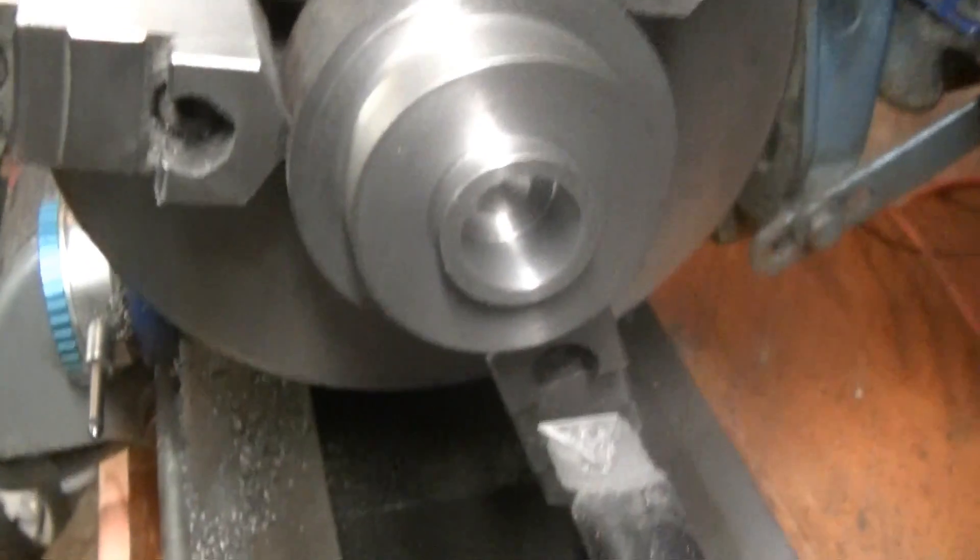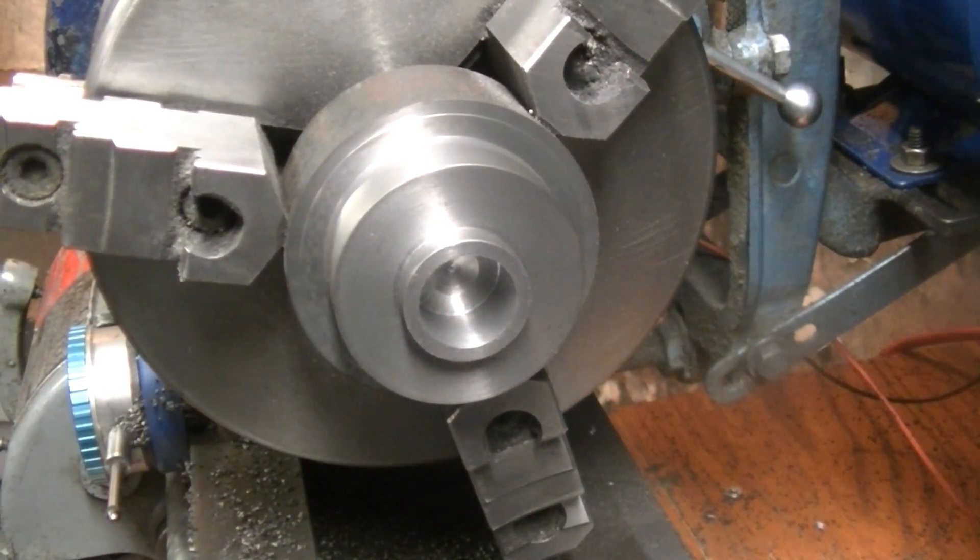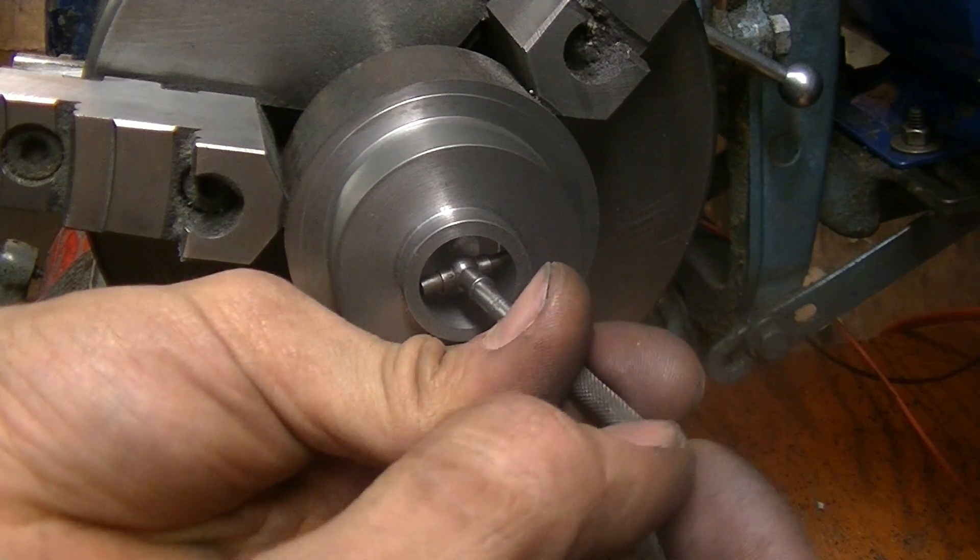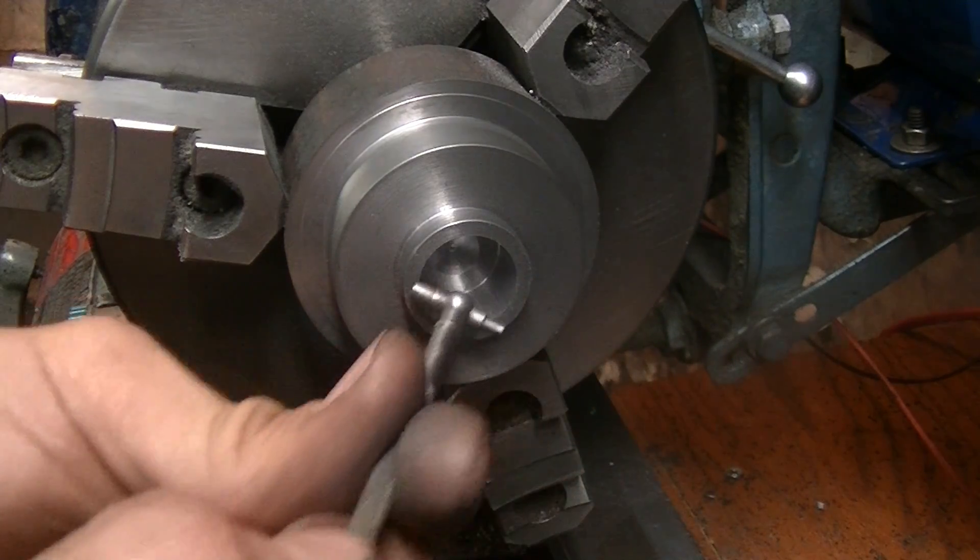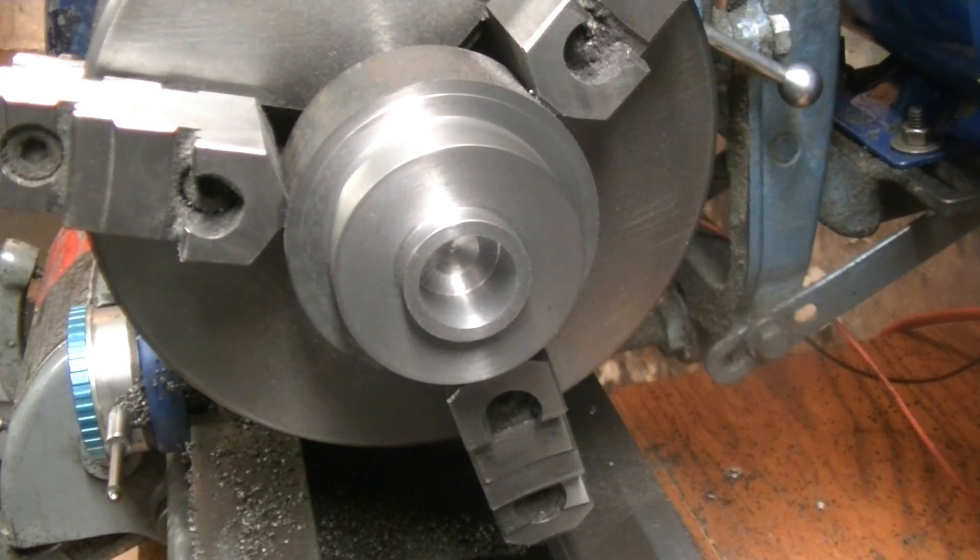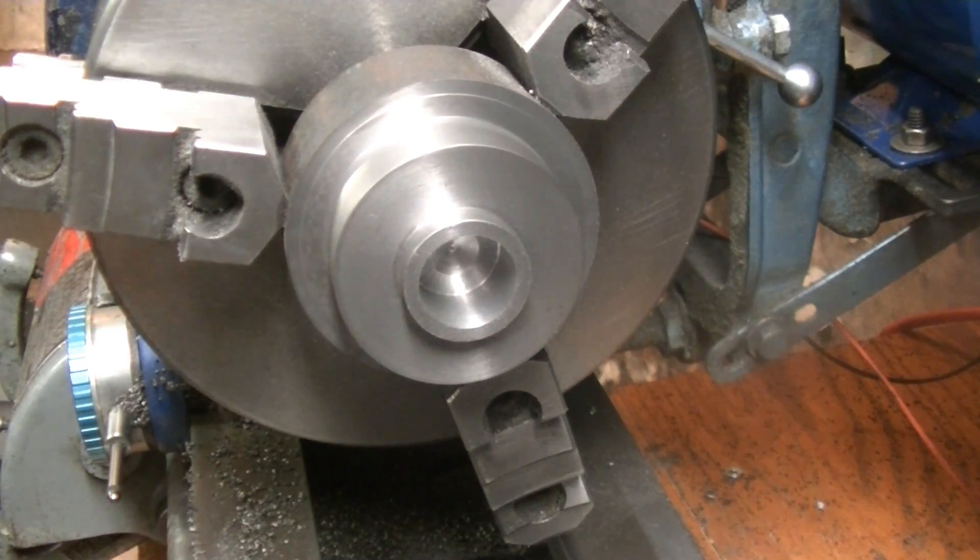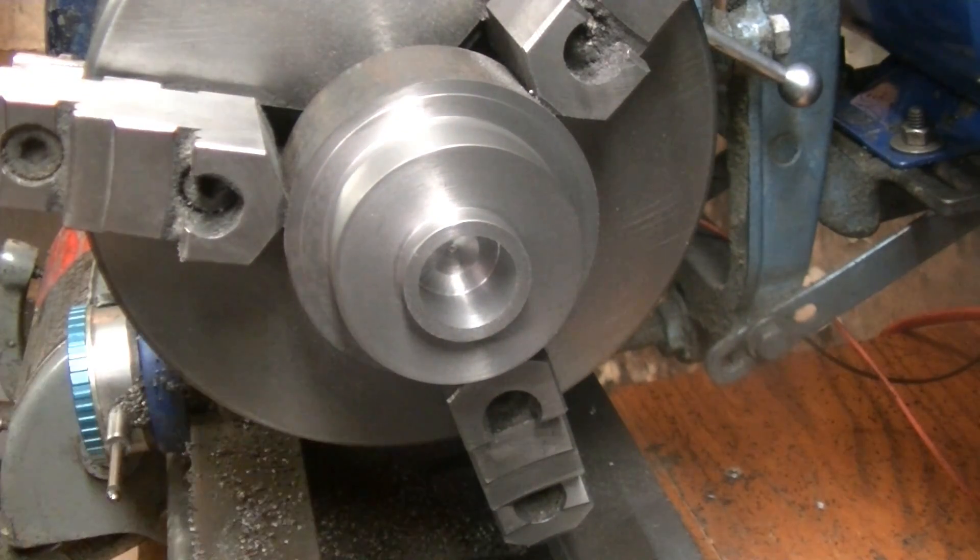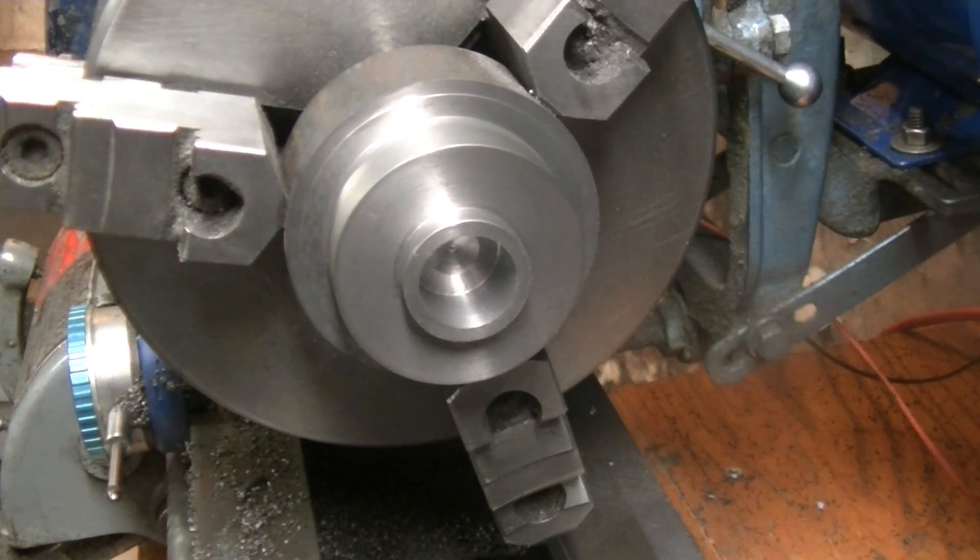Let's take a measurement. Wow, we're 6 over. I don't know how the heck that happened, must have been some flexing. But this is not critical, because what's doing the sealing is everything below this. I just want this to fit fairly snug.